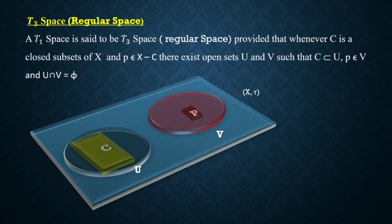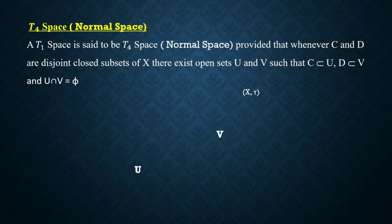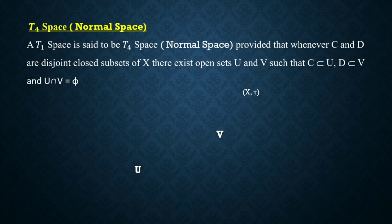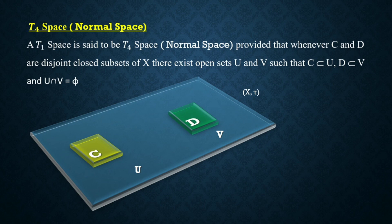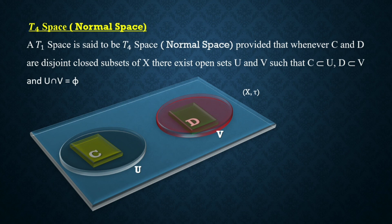The last definition is T₄ space, or normal space: a T₁ space is said to be T₄ or normal provided that whenever C and D are disjoint closed subsets of X, there exist open sets U and V such that C is a subset of U, D is a subset of V, and U intersection V is empty. Suppose the space is a topological space and let C and D be two disjoint closed subsets; the space is normal provided there exist two disjoint open sets U and V such that C is a subset of U and D is a subset of V.